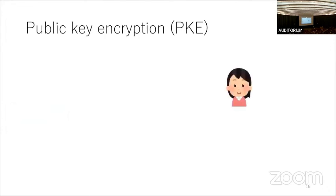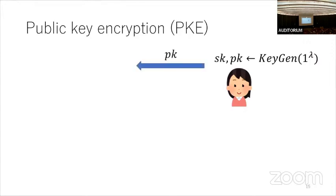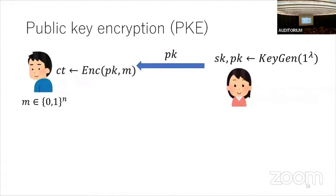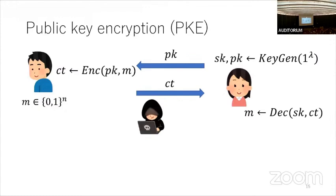In public key encryption, the receiver runs a key generation algorithm to produce a secret key and public key. The public key is publicly broadcast. The sender runs an encryption algorithm to generate a ciphertext, which is sent to the receiver. The receiver can decrypt using her secret key. An adversary with access to both the public key and ciphertext cannot learn the message.